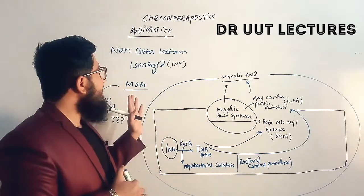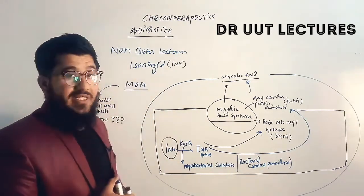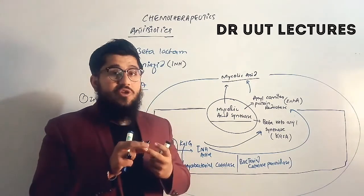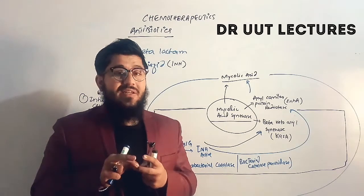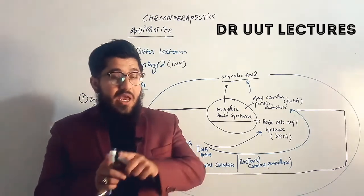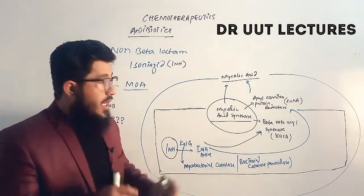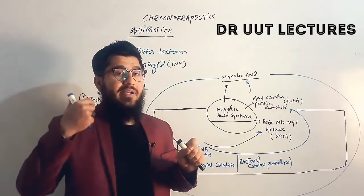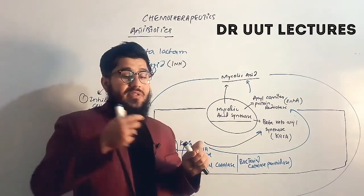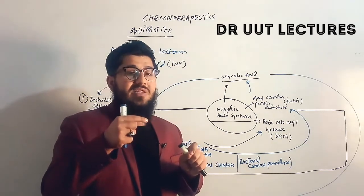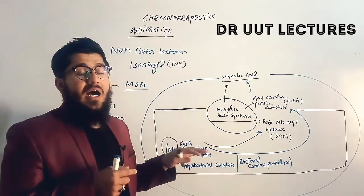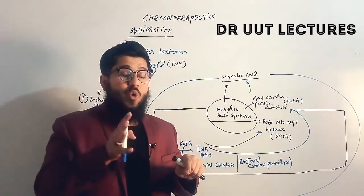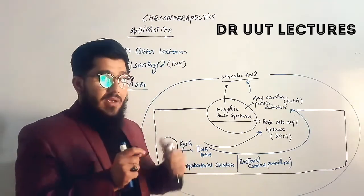Isoniazid and other beta-lactam and non-beta-lactam antibiotics show two important actions: bactericidal and bacteriostatic. When bacteria are rapidly dividing and actively growing, these antibiotics cause lysis and show bactericidal action. When bacteria are at rest and not dividing, these antibiotics show bacteriostatic action.